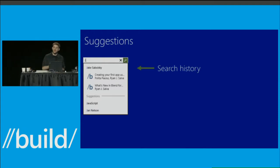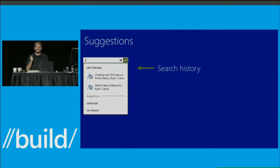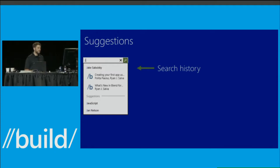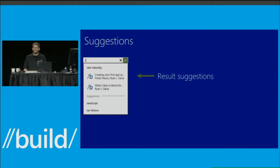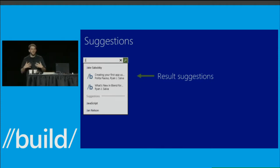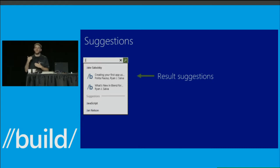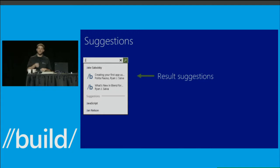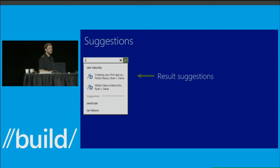That's why the search box will remember the searches users enter — without you doing any work at all, history is preserved and suggested to the user. Result suggestions are my favorite kind: the app suggestions, music suggestions, and stock suggestions that let you get to where you're trying to go instantly. They bypass the search results page entirely, which is the holy grail — cutting out the middle man and getting users right to what they're after.